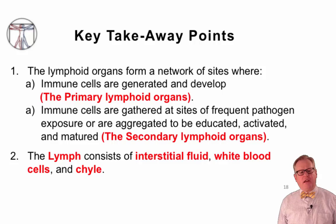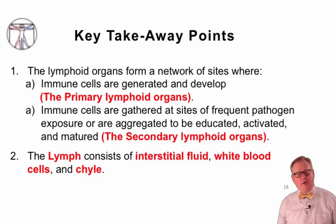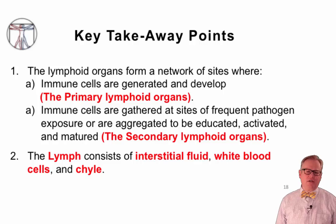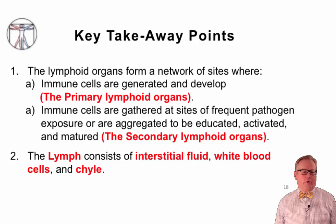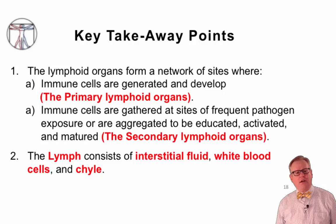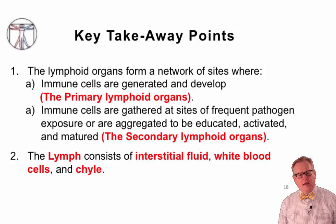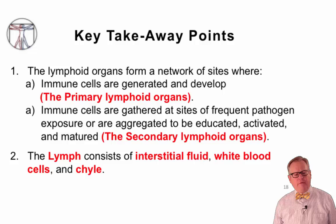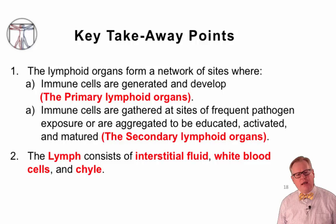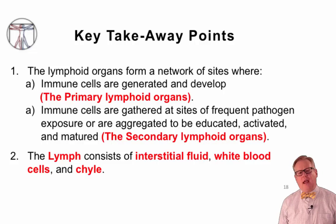The key takeaway points from this video: first, the lymphoid organs form a network of sites where immune cells can be generated and begin to develop — these are the primary lymphoid organs including the bone marrow and the thymus. They also provide sites where immune cells frequently meet pathogens, and where immune cells are aggregated to be educated, activated, or matured — these are the secondary lymphoid organs including the spleen, the lymph nodes, the tonsils, the adenoids, and the mucosa-associated lymphoid tissue. The second take-home point is that lymph is a bodily fluid that consists of interstitial fluid that bathes the tissues, white blood cells that leave the vascular space to migrate through the tissues, and chyle.